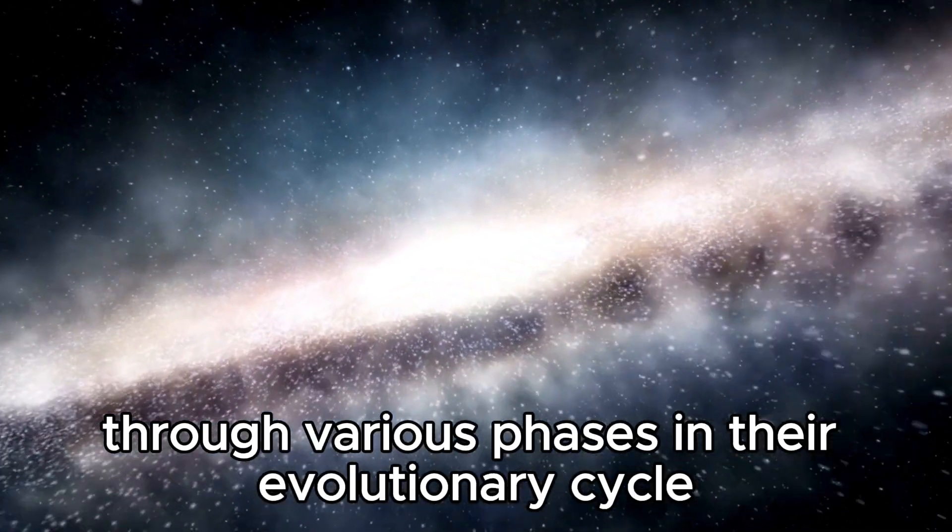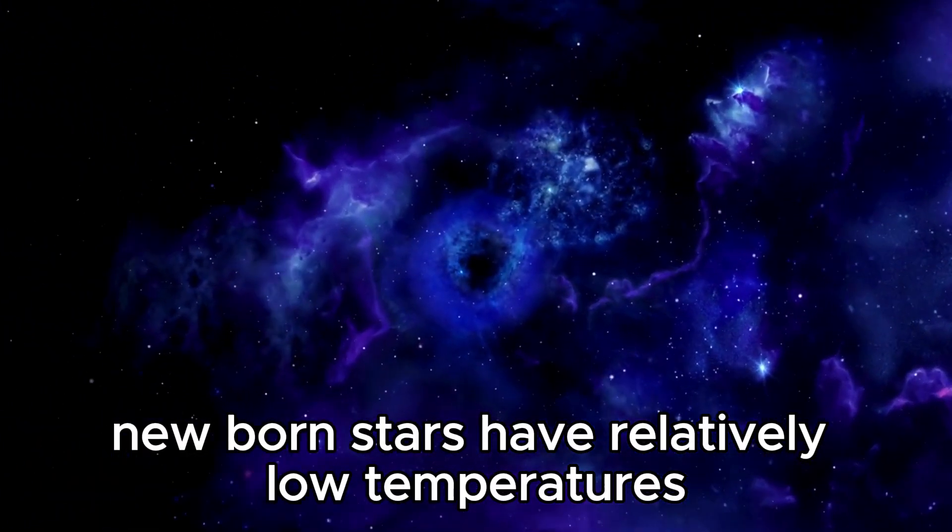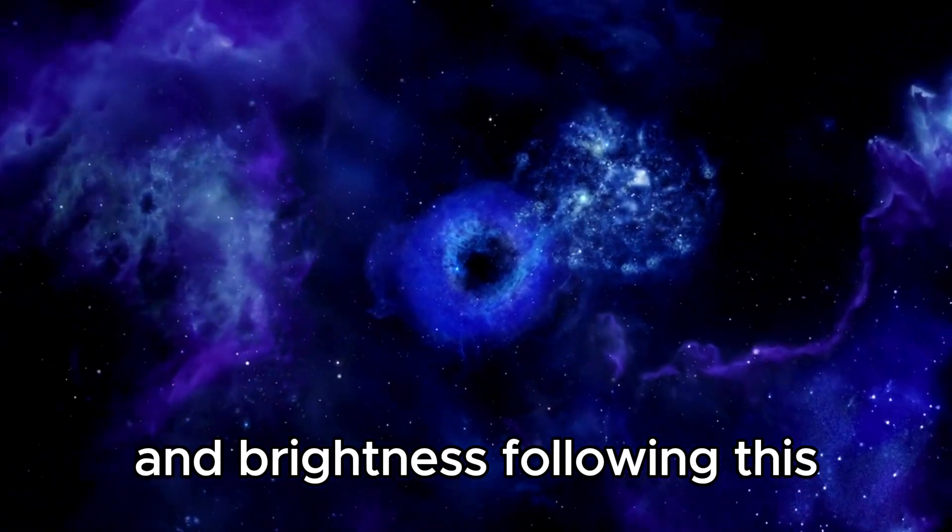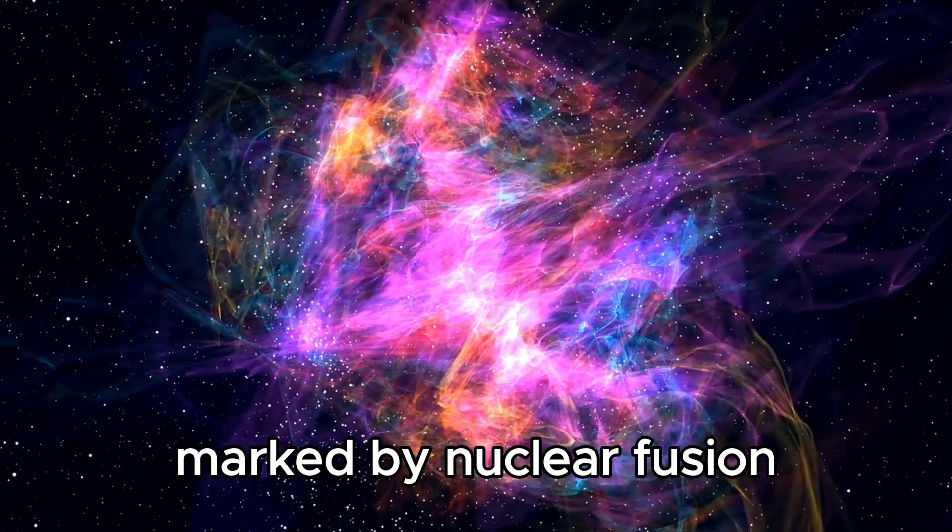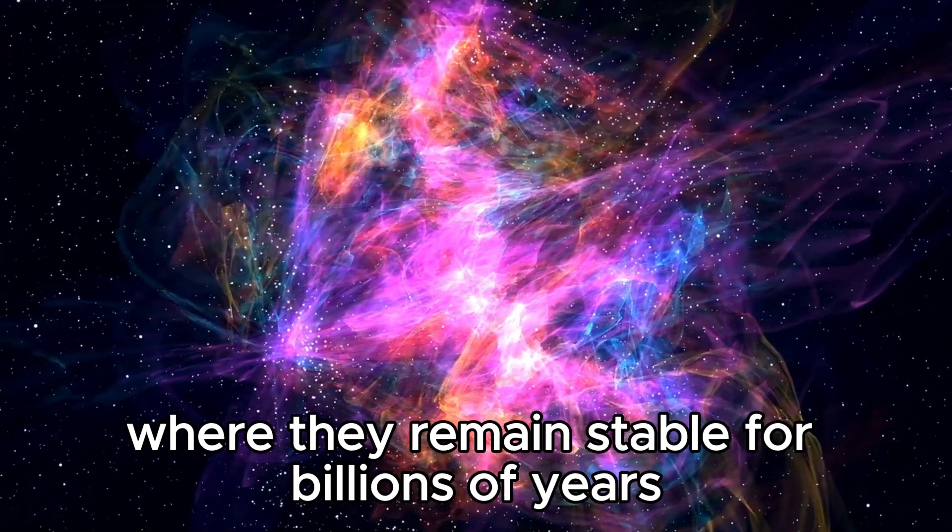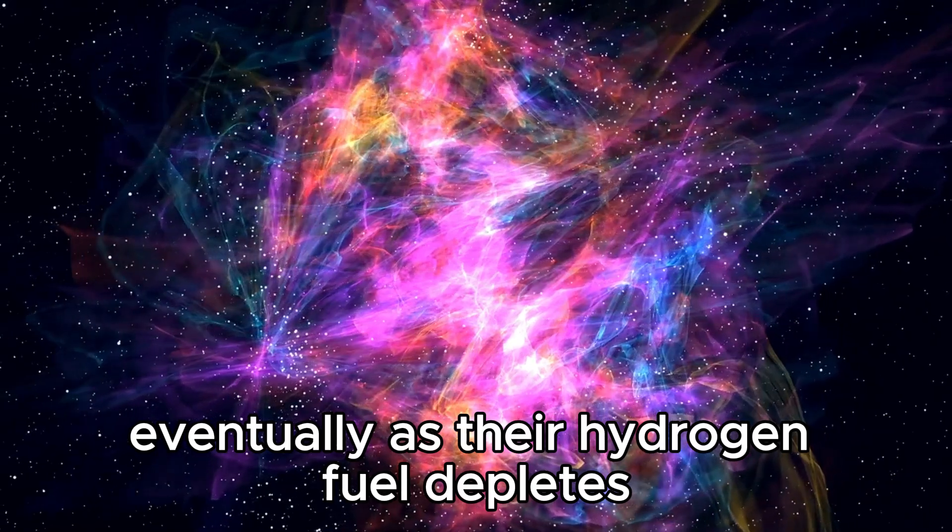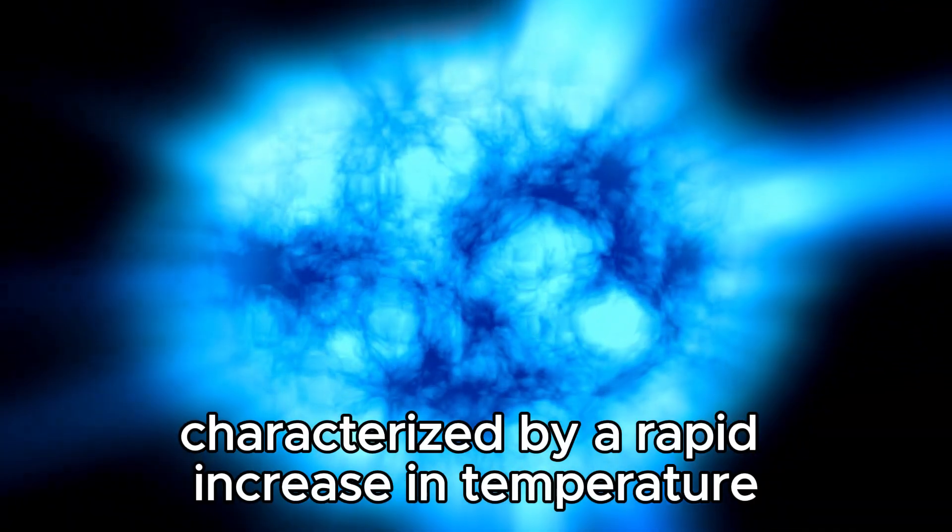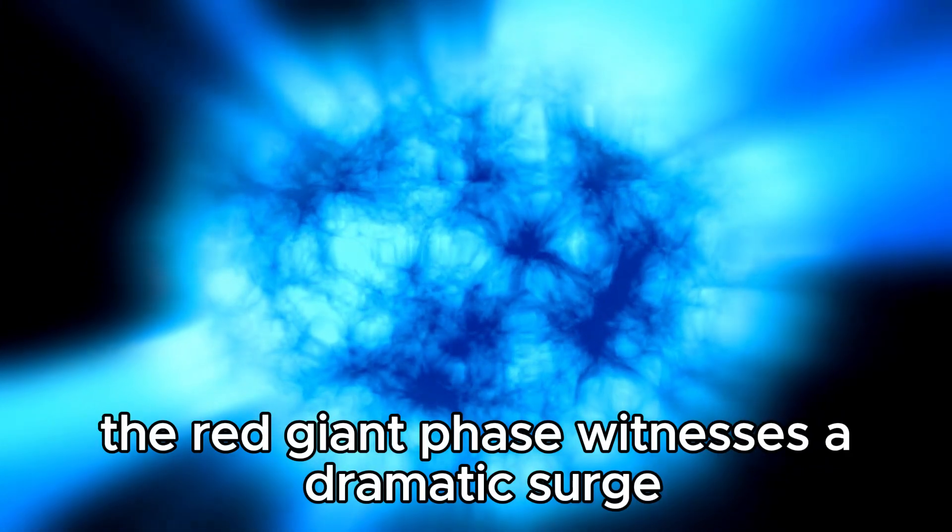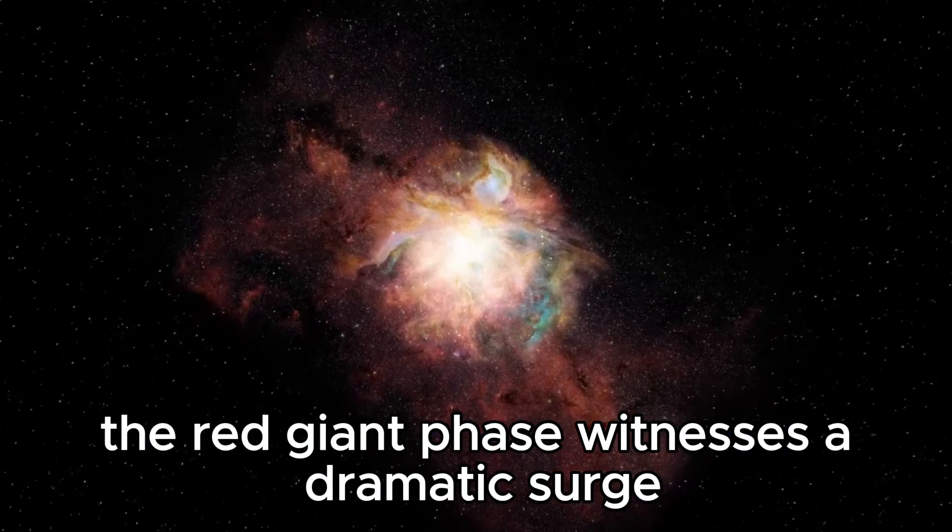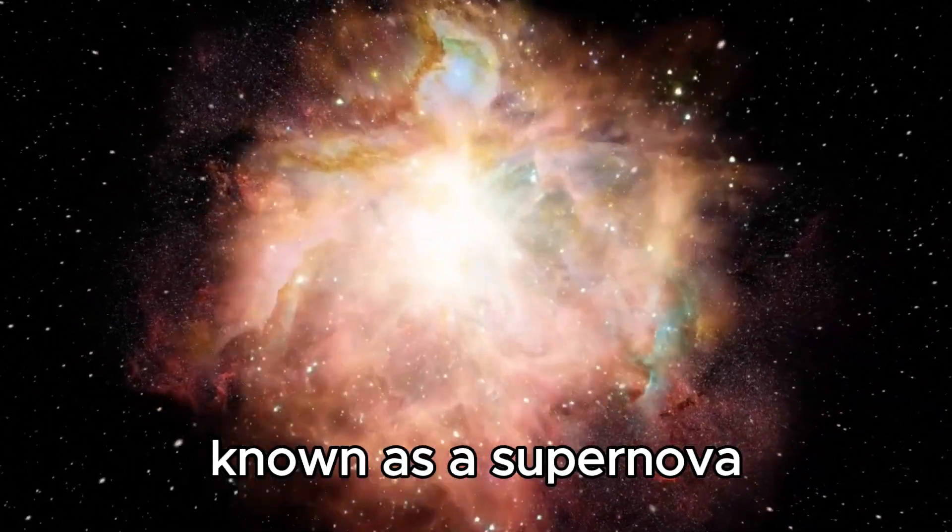Side stars embark on a grand journey through various phases in their evolutionary cycle. Newborn stars have relatively low temperatures and brightness. Following this, they progress into the main sequence phase, marked by nuclear fusion, where they remain stable for billions of years. Eventually, as their hydrogen fuel depletes, they transition into the red giant phase, characterized by a rapid increase in temperature and brightness. The red giant phase witnesses a dramatic surge in energy output before culminating in a catastrophic explosion known as a supernova.